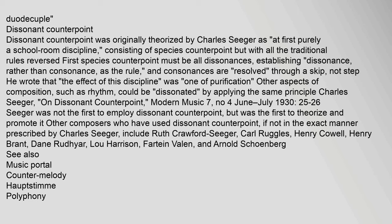Dissonant counterpoint was originally theorized by Charles Seeger as, at first, purely a school-room discipline consisting of species counterpoint but with all the traditional rules reversed. First species counterpoint must be all dissonances, establishing dissonance rather than consonance as the rule, and consonances are resolved through a skip rather than by step. Seeger wrote that the effect of this discipline was one of purification. Other aspects of composition, such as rhythm, could be 'dissonated' by applying the same principle. Seeger was not the first to employ dissonant counterpoint, but was the first to theorize and promote it.